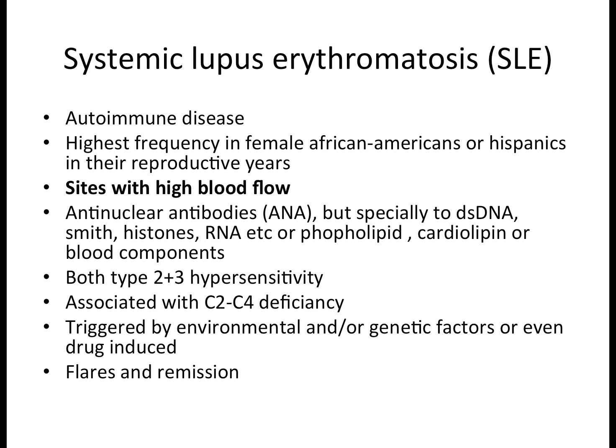SLE is an autoimmune disease, seen mainly in female African Americans and Hispanics in their reproductive years. The ratio is 9 to 1 between females and males. Females are predominantly affected because their immune system is usually downregulated during menstruation and pregnancy, making it easier for an autoimmune disease to take hold.